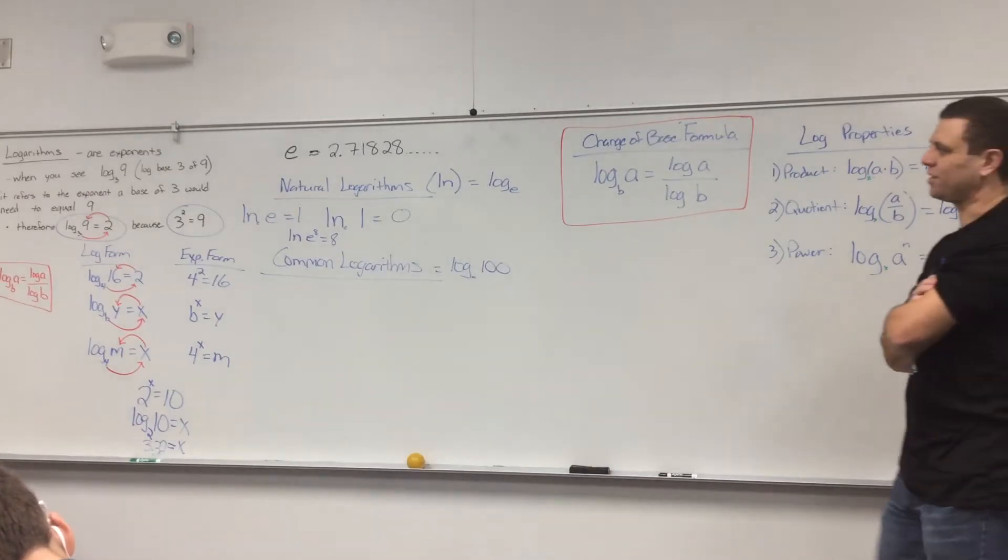All of these properties are still true. So, if you would ever see this, natural log 5 plus natural log 4, you could rewrite it as natural log 20, because I can multiply them together, right? Using the product property. So, all of the log properties are still true when you're dealing with natural logarithms. Natural logarithms are just another type of logarithm.